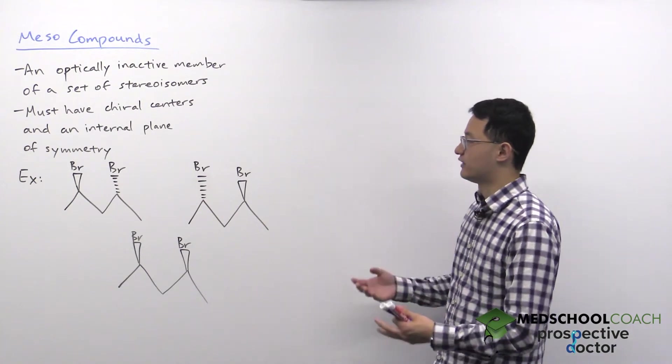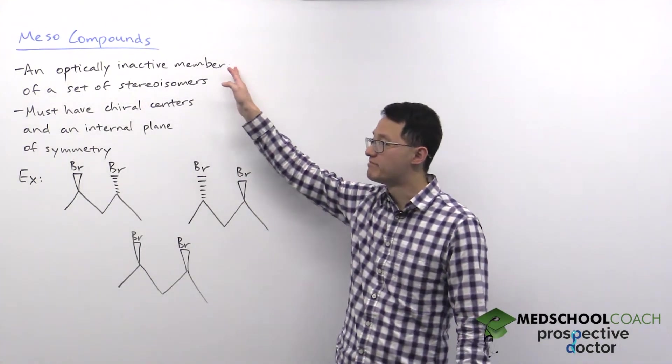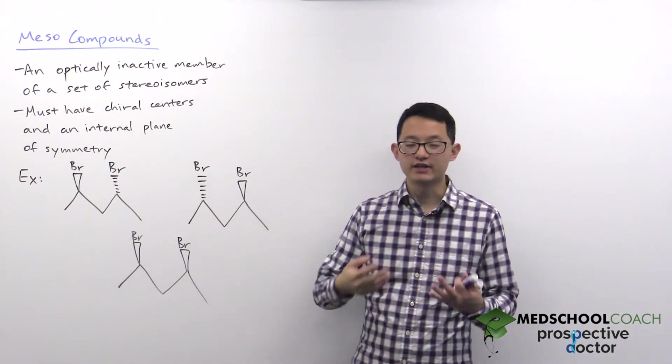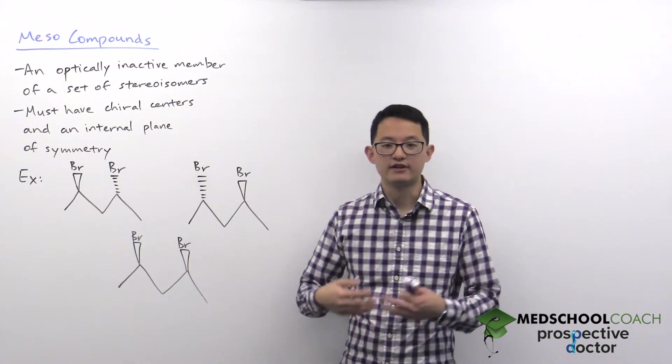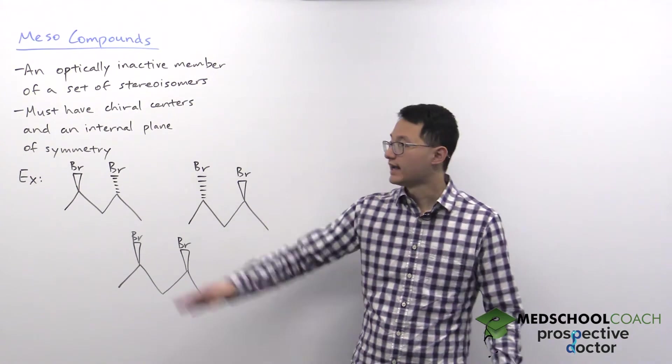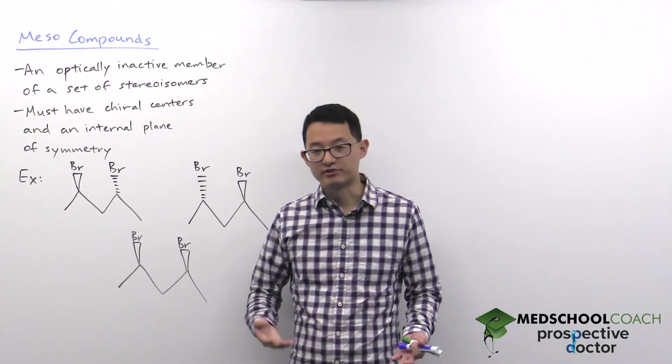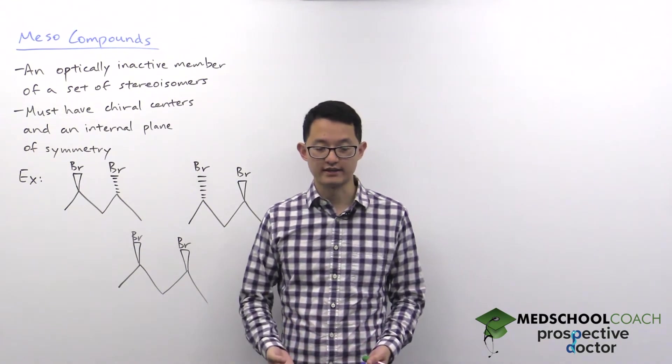First of all, you can define meso compounds as an optically inactive member of a set of stereoisomers. That means when you're looking at meso compounds and comparing them with other stereoisomers, they're going to have the same atomic connectivity but the atoms are arranged differently in space. And the meso compound will not exhibit any optical activity, meaning that it does not rotate plane polarized light.